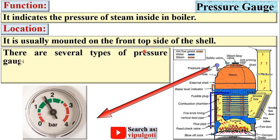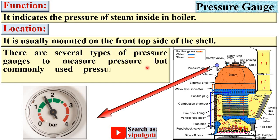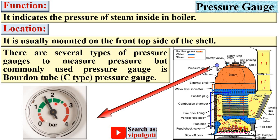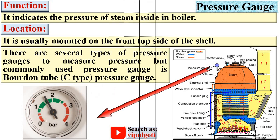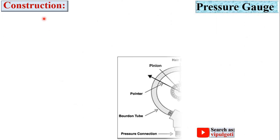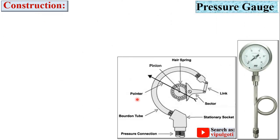There are several types of pressure gauges to measure pressure, but the commonly used one is the Bourdon tube, or you can say C-type pressure gauge. Today we will discuss about the C-type pressure gauge. Here you can see this is the C-type pressure gauge, also called the Bourdon tube pressure gauge.